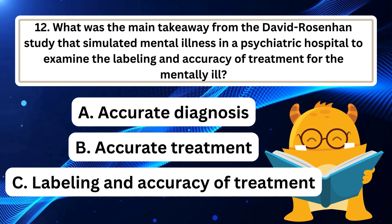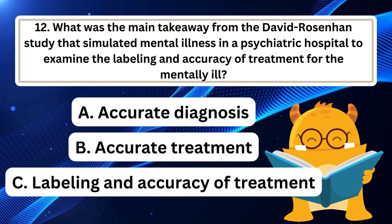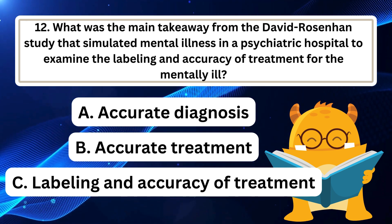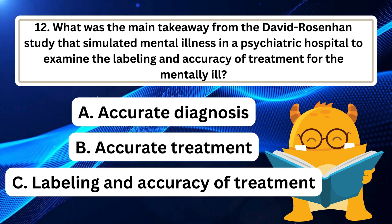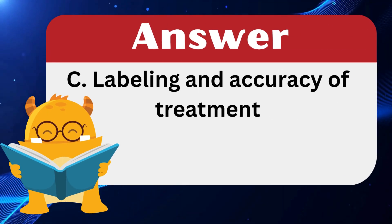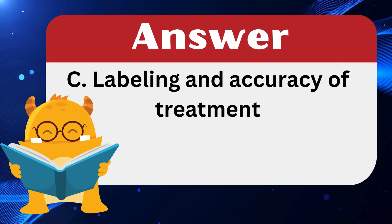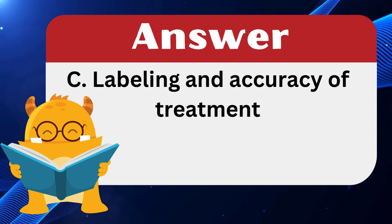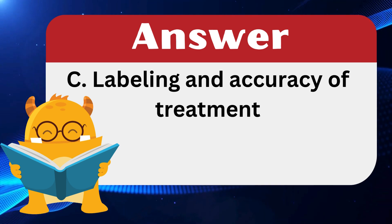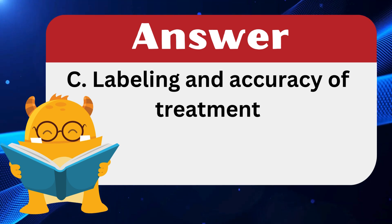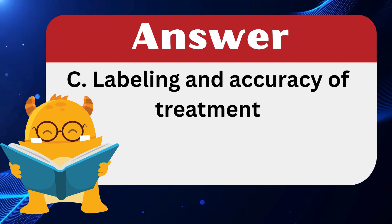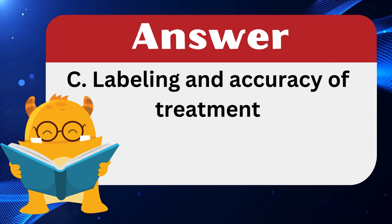Question 12: What was the main takeaway from the David Rosenhan study that simulated mental illness in a psychiatric hospital to examine the labelling and accuracy of treatment for the mentally ill? The answer is C: Labelling and accuracy of treatment. The study highlighted how individuals without mental illness were admitted to psychiatric hospitals and labelled with a diagnosis, emphasizing the difficulty in distinguishing sanity from insanity and raising concerns about the reliability of psychiatric diagnoses and effectiveness of mental health treatment.